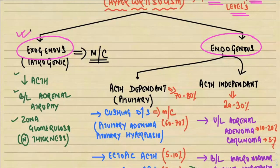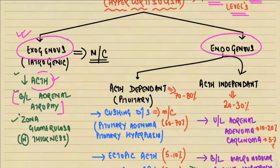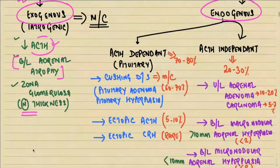Whenever there is an excessive amount of steroids in the body from outside, they cause feedback inhibition, so ACTH levels come down and the adrenals are not stimulated — resulting in bilateral atrophy of the adrenal glands. Very importantly, in this condition the zona glomerulosa will be of normal thickness. Now looking at the endogenous cause of Cushing syndrome, it can be ACTH-dependent — meaning the pituitary releases excessive ACTH — or ACTH-independent, meaning the adrenals are producing excess hormones by themselves.